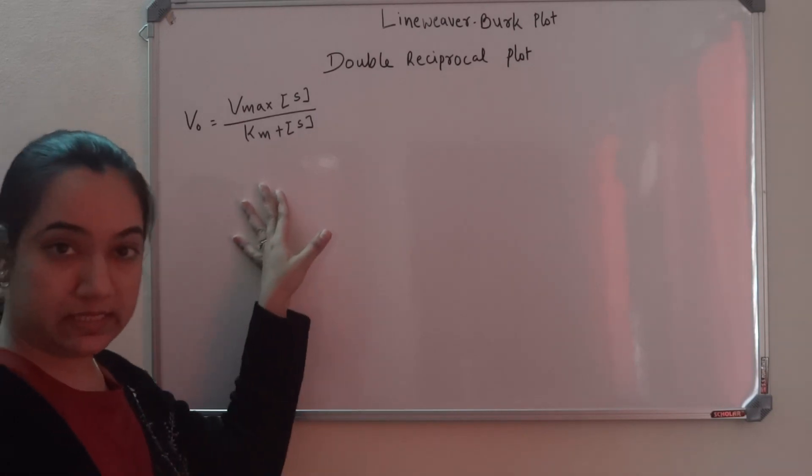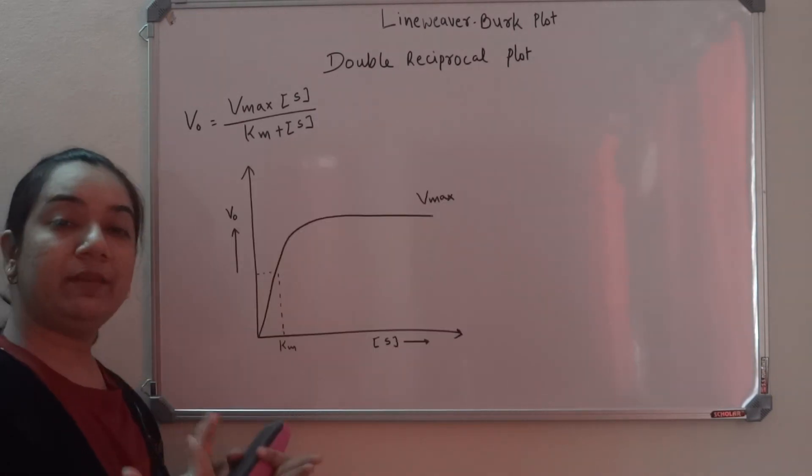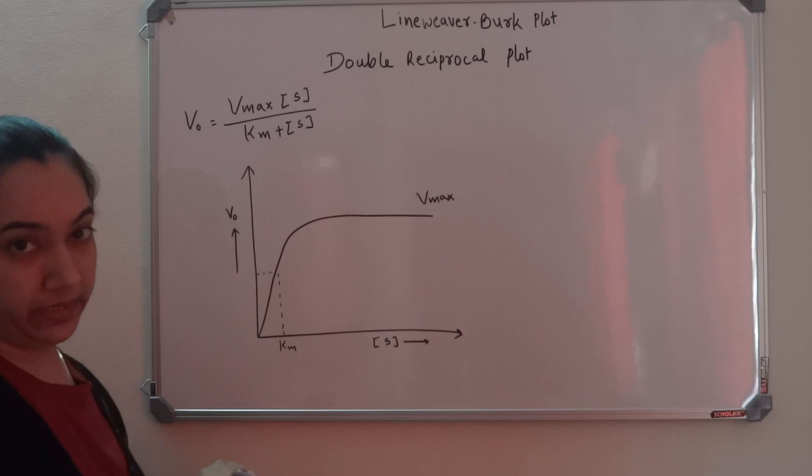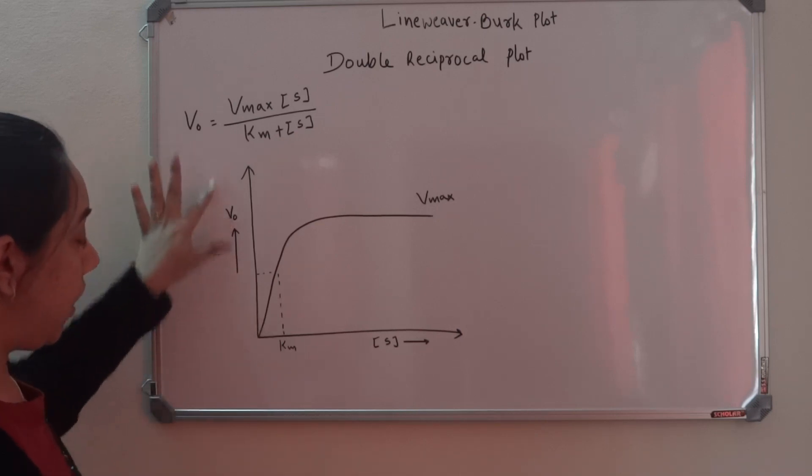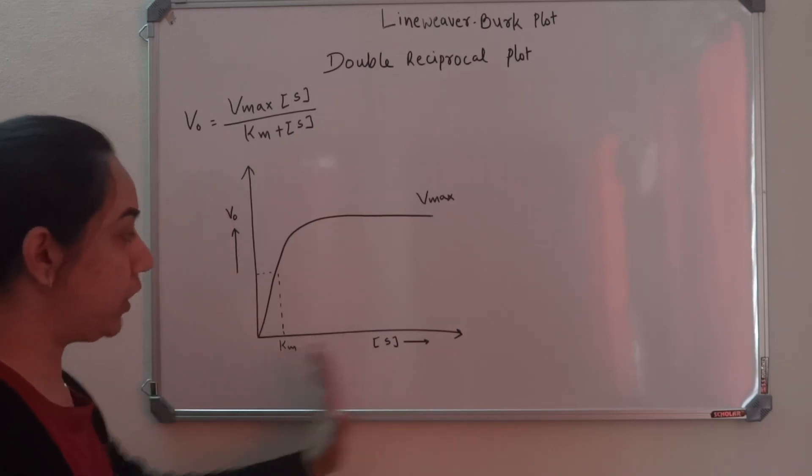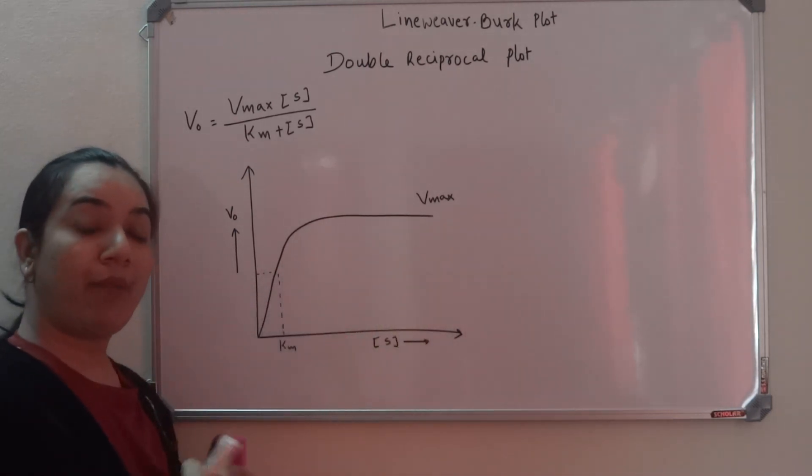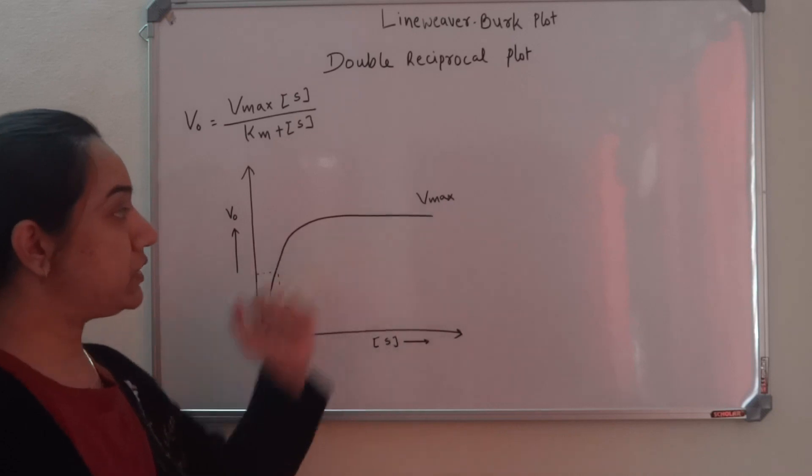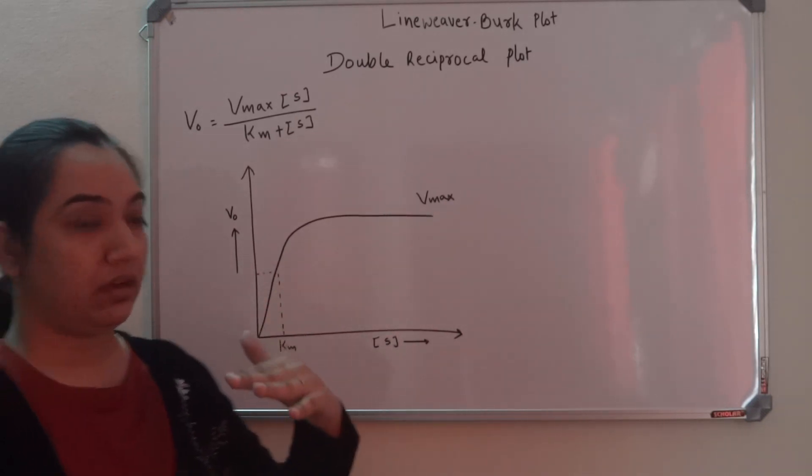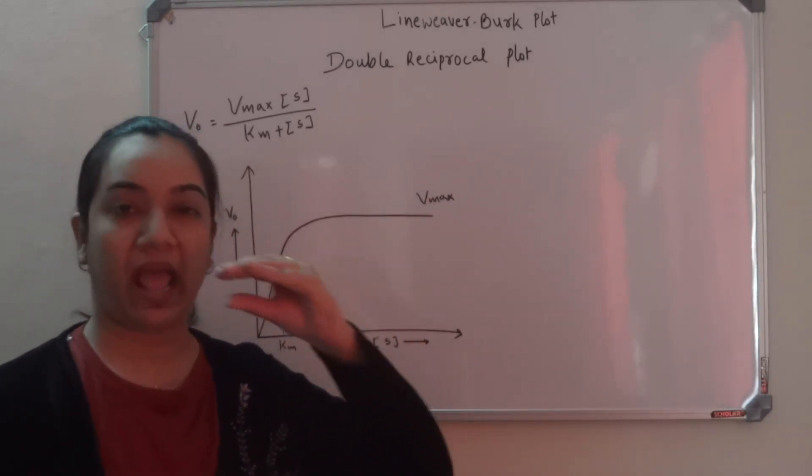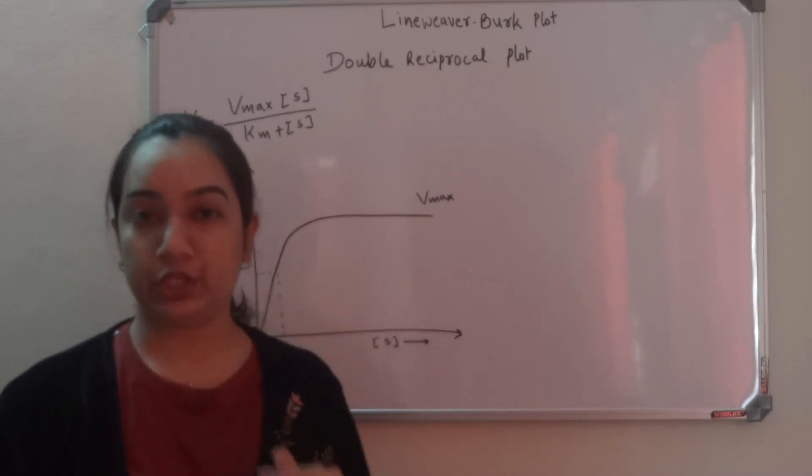Now let's plot this and see what we get. When we plot the MM equation, we have the velocity on the y-axis and substrate concentration on the x-axis. This is the Vmax, the maximum velocity, or the enzyme saturation point.